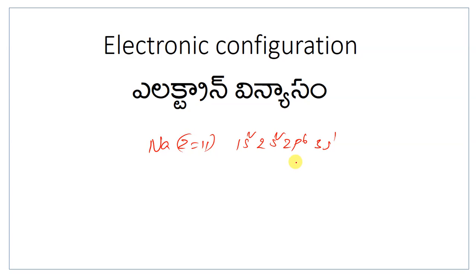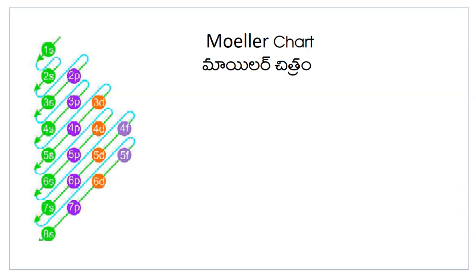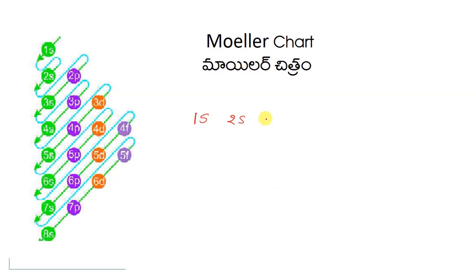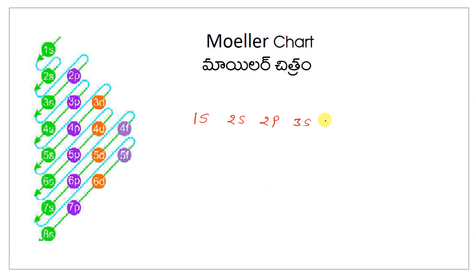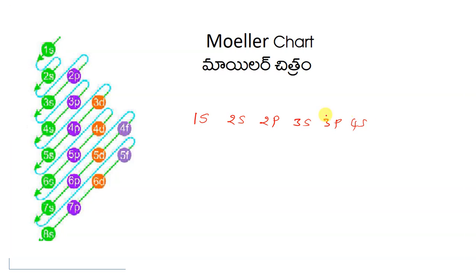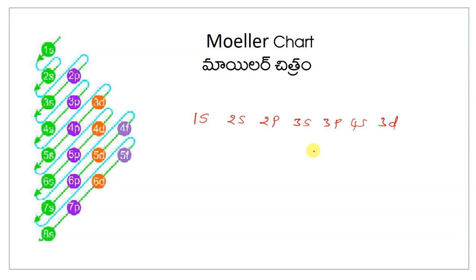It is very easy. Electron configuration is very easy. Don't think it is difficult to write. It would be so much easier if you follow me. You already have an idea of the Moeller chart. The orbital order is: first 1s, next 2s, next 2p, next 3s, next 3p, next 4s, not 3d. Yes, 3d. This is the order.